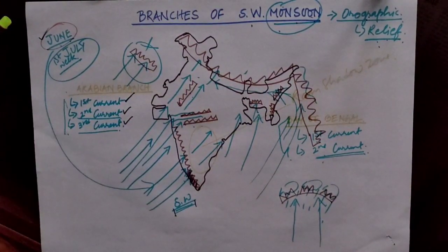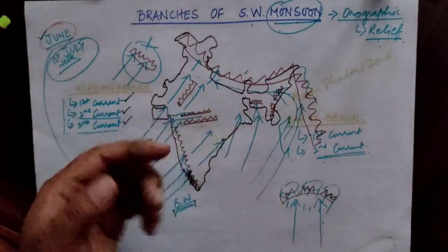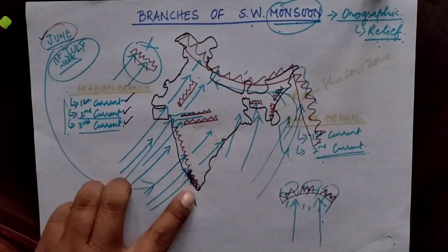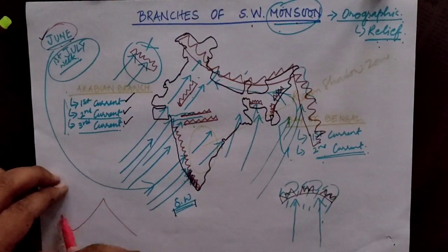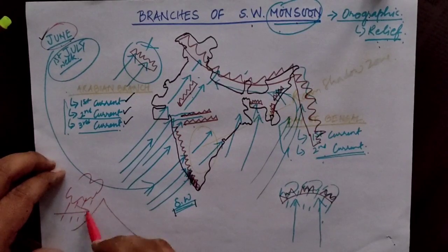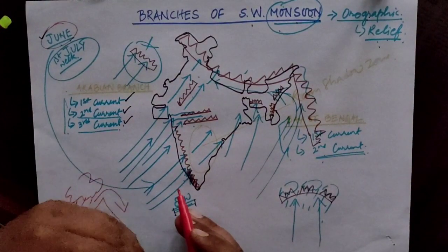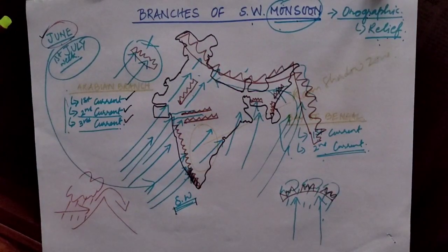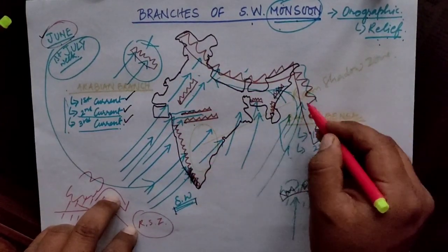The first current of the Arabian branch enters India from the southwestern direction and hits the Western Ghats. The western slopes of the Western Ghats receive a maximum amount of rainfall. However, when the winds descend from the top of the Western Ghats on the other side, that area falls under the rain shadow zone — so states like Tamil Nadu and Andhra Pradesh fall under the rain shadow zone.